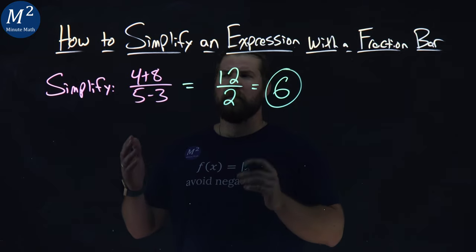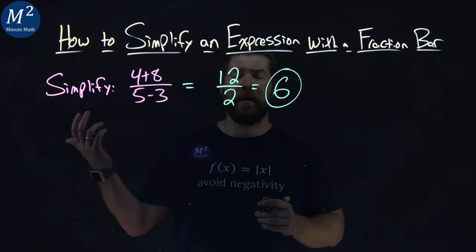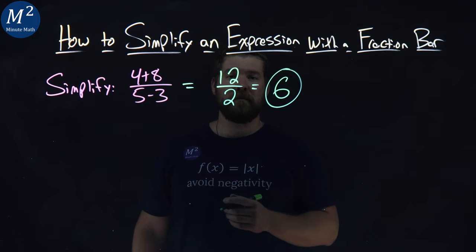That was pretty easy. So when we simplified 4 plus 8 over 5 minus 3, we just got 6.